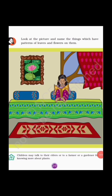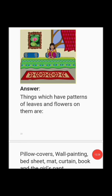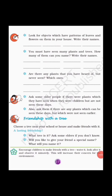Now look at the picture and name the things which have a pattern of leaves and flowers on them. You have to observe the picture carefully. Things with a pattern of leaves and flowers on them include: pillow covers, wall painting, bed sheet, mat, curtain, book, and a girl's pants. If you see any other, you can also write. The next question is: look for objects which have a pattern of leaves and flowers in your house and write their names. You can write examples like bed sheets, pillow covers, mats, and wallpapers.